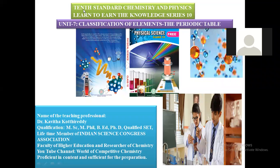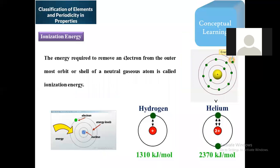Good morning. In this session we are going to start with 10th standard chemistry and physics, unit number seven: classification of elements and the periodic table. This is series number 10. Earlier we completed various classifications based on the perceptions of various scientists, and also periodic trends in terms of atomic radius and valency. We now enter into ionization energy — how these are varied in groups as well as in periods of the modern periodic table.